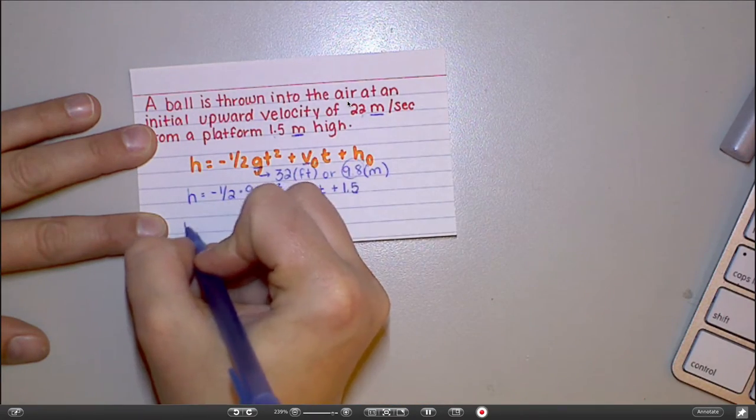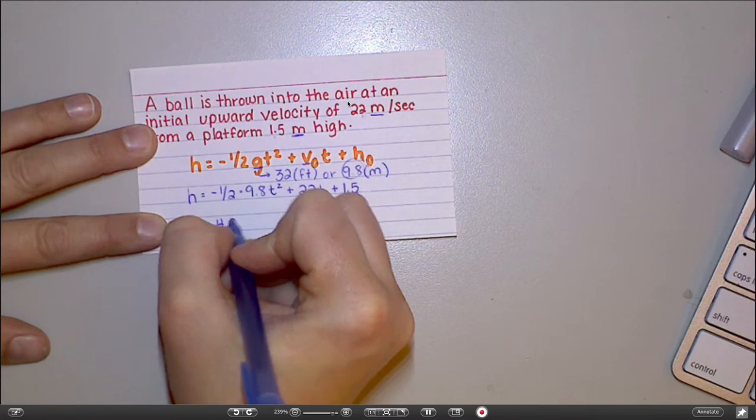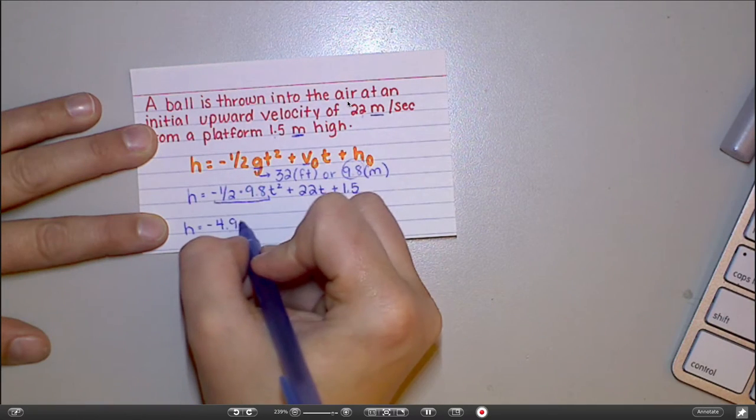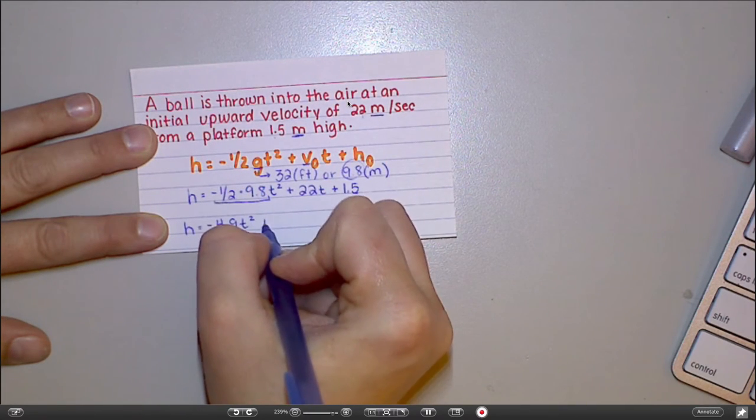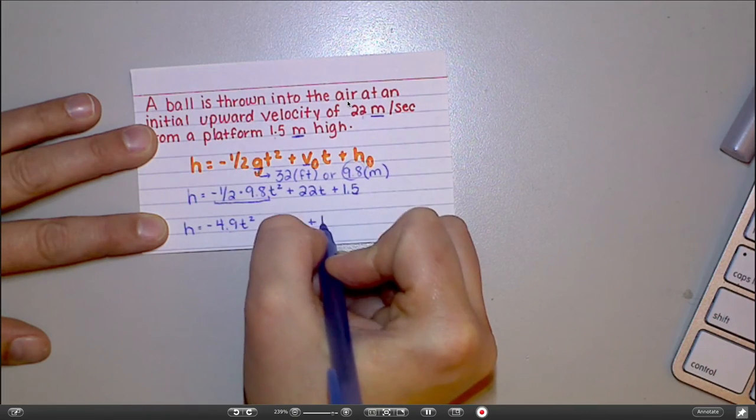So my equation would be h equals negative 4.9 because negative 1/2 times 9.8 is negative 4.9, t squared plus 22t plus 1.5.